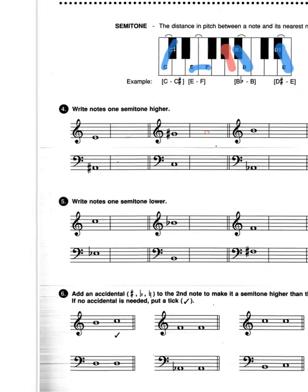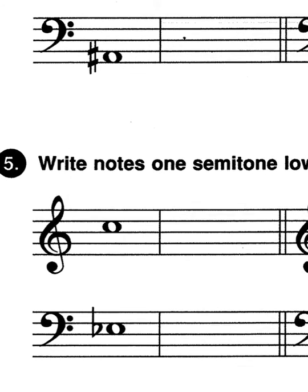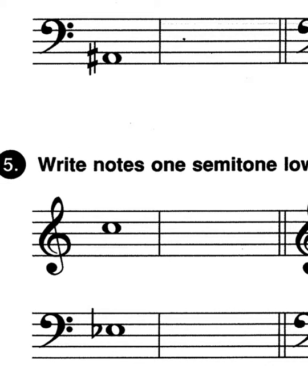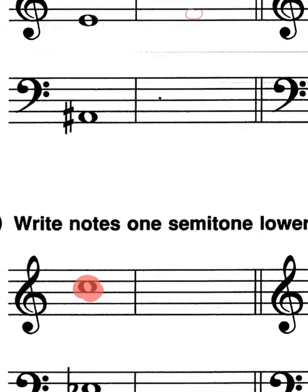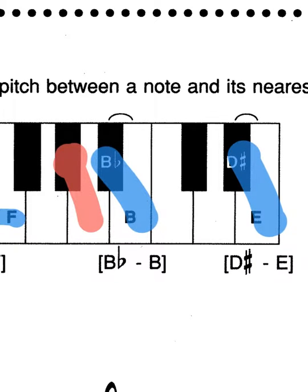You're writing notes one semitone higher. This next example, we're writing notes one semitone lower. So you can see that this note over here is a C. And again, I always suggest that you refer back to your little keyboard here. So this here is a C, so semitone lower than that is of course B.